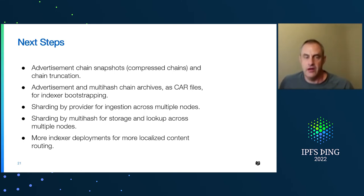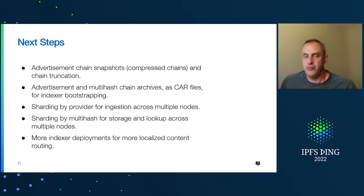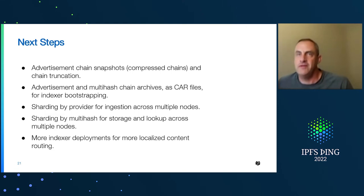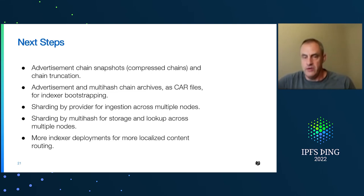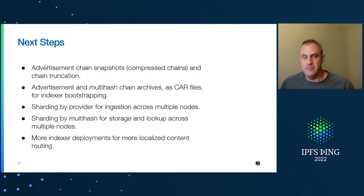We're also working on sharding by provider so we can spread ingestion across multiple nodes, as well as sharding by multi-hash for storage and lookup across multiple nodes. Generally this will be within a single deployment, since we'll want more indexer deployments for more localized content routing, but we still want to scale each deployment by spreading the work across multiple nodes — these are two ways to divide the work: by ingestion and by storage.